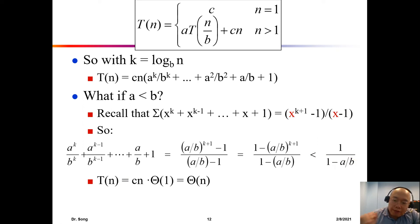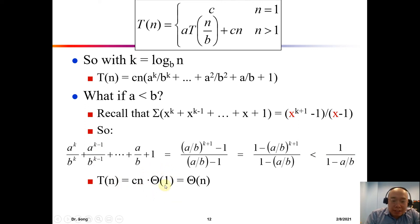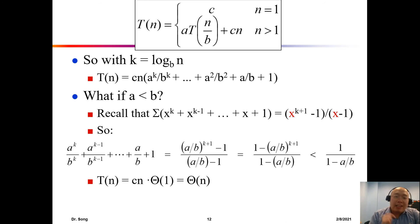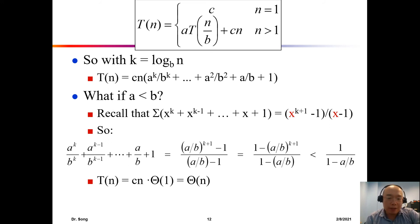Since the geometric series evaluates to a constant, cn multiplied by a constant is Θ(n). So when a < b, T(n) = Θ(n) — this is a linear time algorithm.